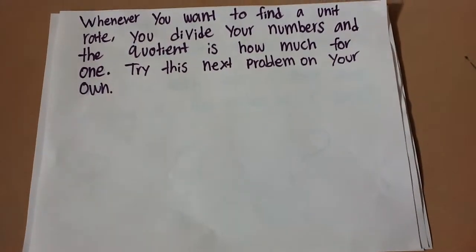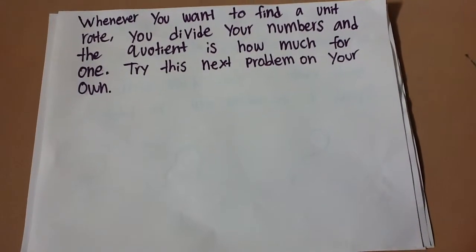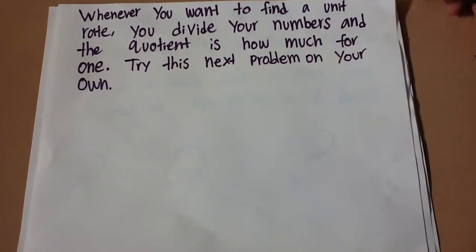Whenever you want to find a unit rate, you divide the numbers and the quotient is how much for one. Try this next problem on your own.